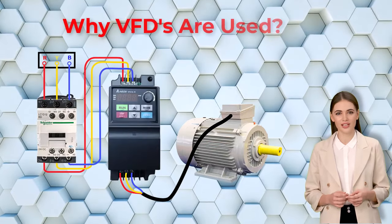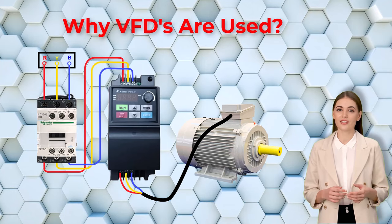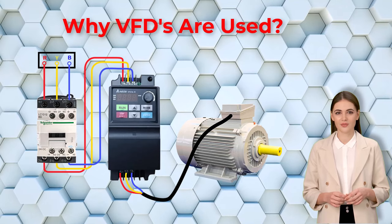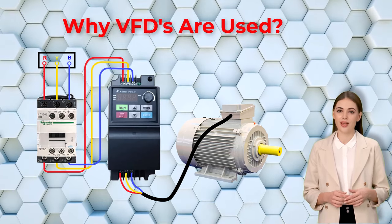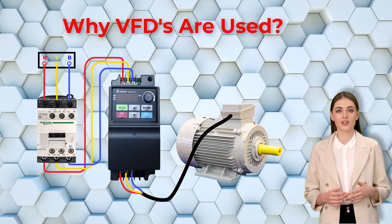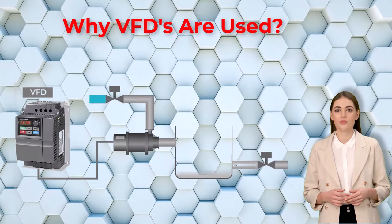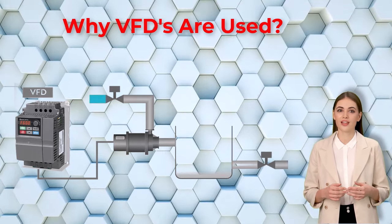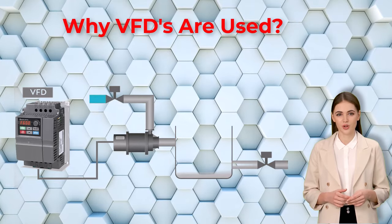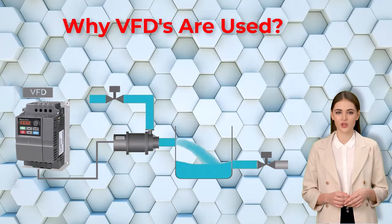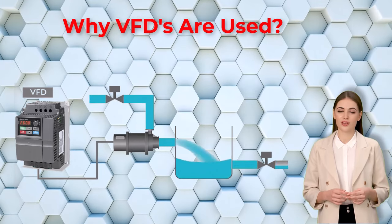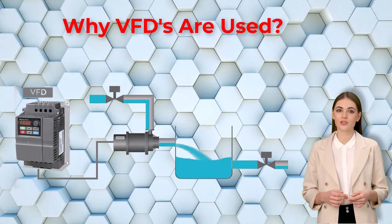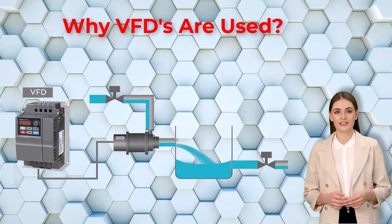VFDs are widely used in various industrial and commercial applications. They can significantly reduce energy consumption by matching the motor's speed to the exact requirements of the application. For instance, in a pump or fan application, a VFD adjusts motor speed to match flow rate requirements, avoiding unnecessary energy consumption when full flow is not needed. VFDs also provide controlled and gentle starting and stopping, minimizing mechanical stress on the motor and connected equipment, extending their lifespan.